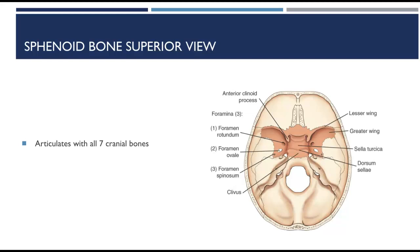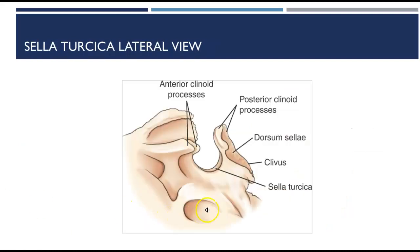The dorsum sella is posterior to the sella turcica — it is the back of the saddle. As seen in the lateral view, the sella turcica and dorsum sella are both best demonstrated on a lateral skull view.